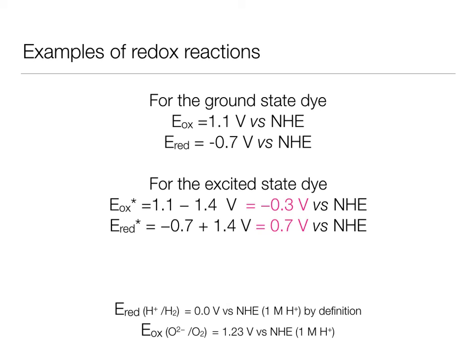And so now we can compare these two voltages with the process we are interested in. Say we are reducing protons to hydrogen, that would require oxidation of the dye. Oxidation of the dye in the excited state happens at minus 0.3 volts. We know that for one molar acid, the reduction of protons to hydrogen will happen at 0 volts. And so therefore, our reducing agent, our excited dye, is strong enough with minus 0.3 volts, and so it will produce hydrogen.